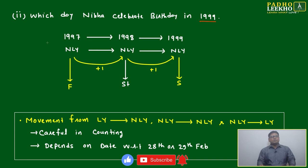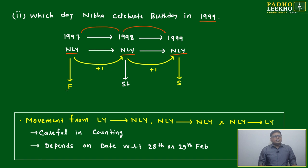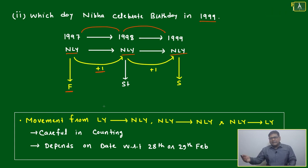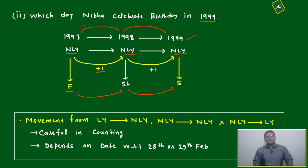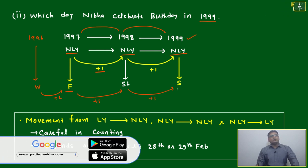Now, which day does Niva celebrate in 1999? Moving from 1997 to 1998 to 1999 — all three are non-leap years. Non-leap year to non-leap year on the same date changes by only +1 day. So: 1997 = Friday, 1998 = Saturday, 1999 = Sunday. In 1996 she celebrated on Wednesday; +2 gives Friday in 1997; +1 gives Saturday in 1998; +1 gives Sunday in 1999.